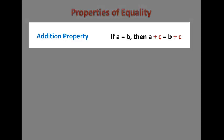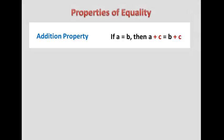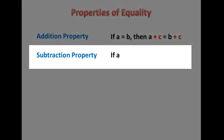It says that if A equals B, then if we add C to one side, then we have to add C to the other side as well. And then the subtraction property says that if we start with A equals B,